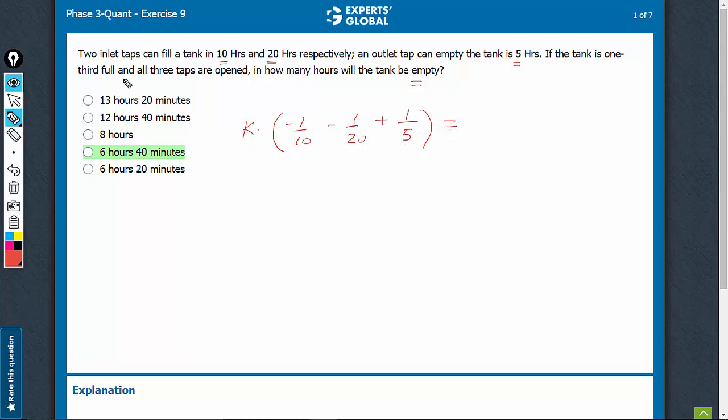What is the total amount of work to be done? The tank is one-third full. So, should this be equal to 1 by 3 or 2 by 3? This should be equal to only 1 by 3 because the tank is one-third full.